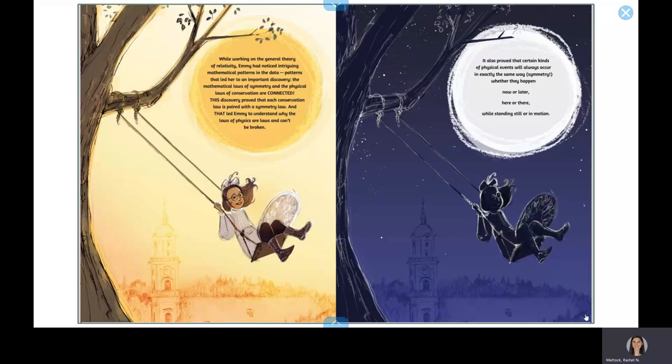The mathematical laws of symmetry and the physical laws of conservation are connected. This discovery proved that each conservation law is paired with a symmetry law, and that led Emmy to understand why the laws of physics are laws and can't be broken. It also proved that certain kinds of physical events will always occur in exactly the same way, symmetry, whether they happen now or later, here or there, while standing still or in motion.